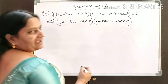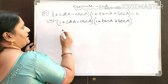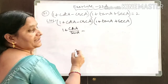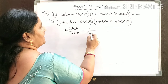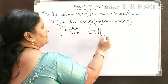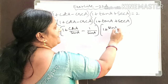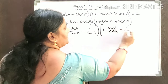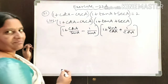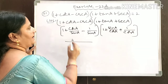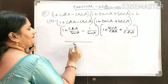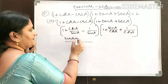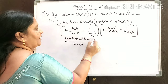We write 1 + cotA as cosA/sinA, and cosecA as 1/sinA. For tanA we write sinA/cosA. Taking LCM in the first bracket, sinA is the LCM, giving us sinA + cosA - 1 in the numerator.